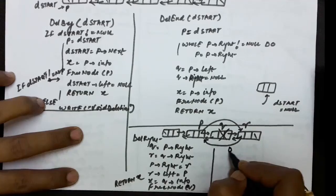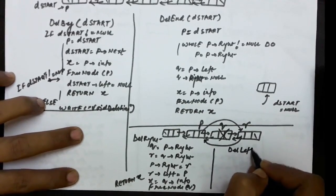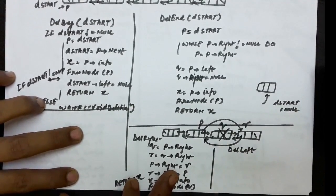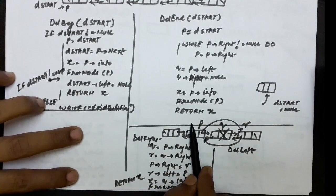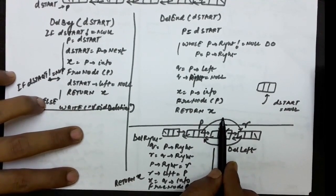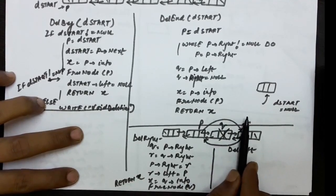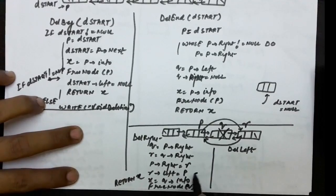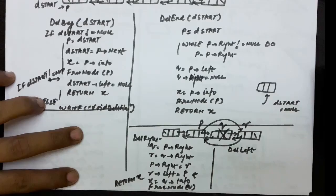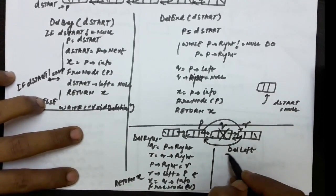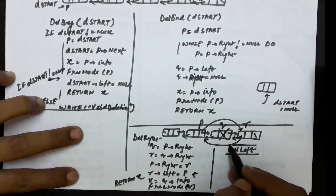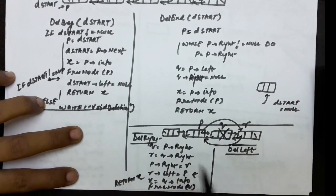Similarly, you can perform the delete-left operation. Please note that I have not written any exceptional conditions. For example, if this is the node given and you are asked to delete the right node, but the right node does not exist, deletion is not possible. Similarly, if this is the node to be deleted and there is no node after it, then setting R dot left equals P has no meaning because R does not exist. So you will have to write many exceptional conditions to make this algorithm perfect. I leave delete-left and the exceptional conditions for delete-right to you.